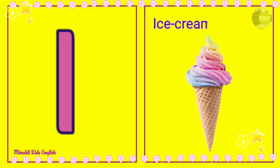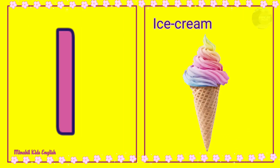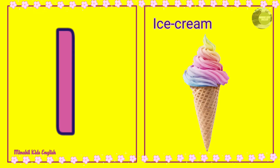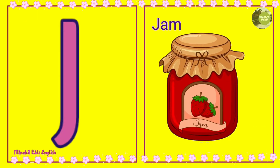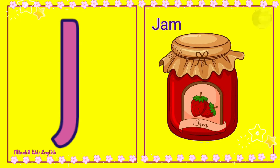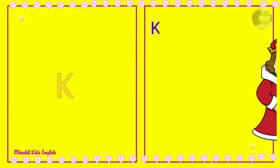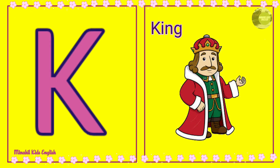I is for Ice Cream. J is for Jam. K is for King.